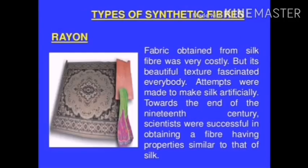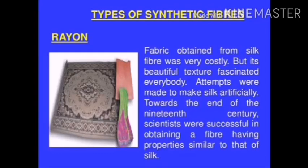Now we will learn about types of synthetic fibres. The first is rayon, also known as artificial silk. It is a synthetic fibre prepared by chemical treatment of wood pulp. These fibres are spun into yarn and then woven into fabric. Rayon has a silk-like appearance, hence it is called artificial silk. The fabric obtained from silk was very costly, so attempts were made to make silk artificially.